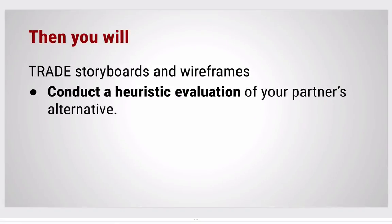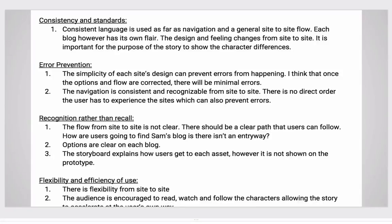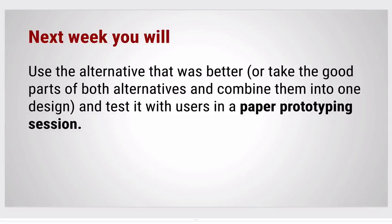Each of you will have two different storyboards and two different wireframes. At the end of the week, you'll trade your materials with your partner and conduct a heuristic evaluation of their alternative — I discuss heuristic evaluations in another video on this week's Blackboard page. At the end of the week, each person has a storyboard, alternatives, and a heuristic report, and you've decided which alternative to use. Next week you'll turn that alternative into a prototype and test it with users.